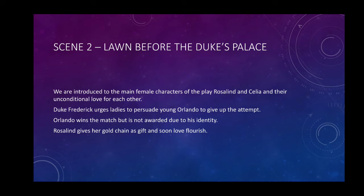In Scene 2, set on the lawn before the Duke's palace, the female lead Rosalind and Celia are both introduced. Rosalind is the daughter of Duke Senior, who has already been banished from the court by his younger brother, and Celia is the daughter of the present Duke, Duke Frederick. We come to know about their close bond — both sisters share a special relationship. Celia is very much concerned about Rosalind because her father was banished, and she tries very hard to keep Rosalind happy in all these circumstances.